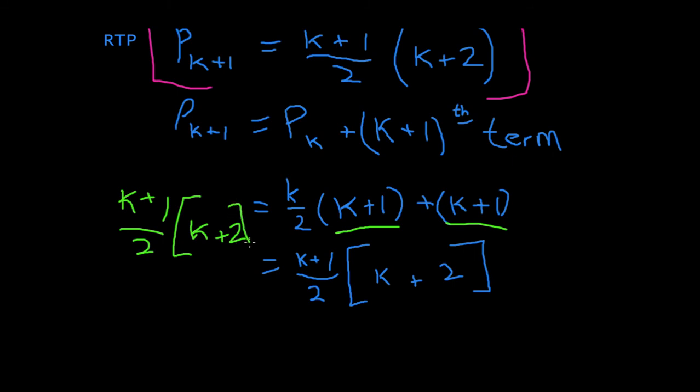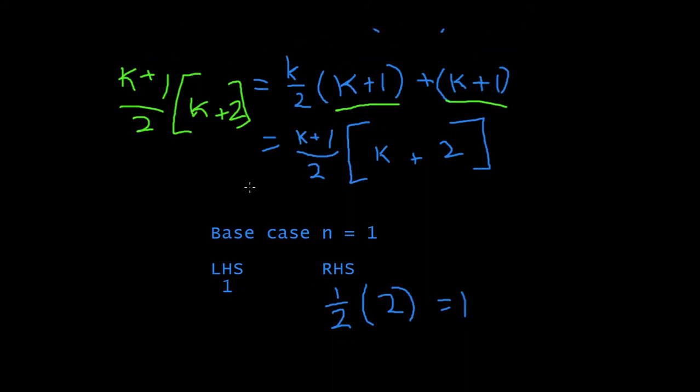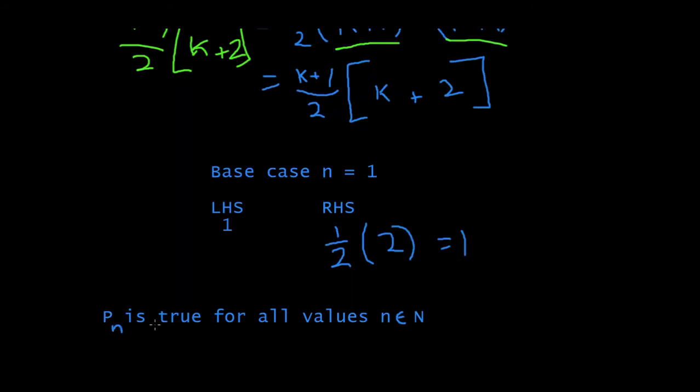Why? Because when you multiply this throughout, the 2 will cancel this 2 out. K plus 1 times 1 will give me this. And, at the end, we just use the base case to recheck to make sure this equation was true. And we get 1 is equal to 1. So, Tn is true for all values. N is part of the set of all natural numbers.